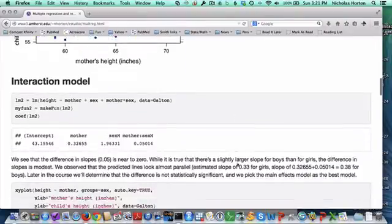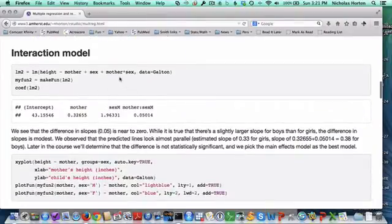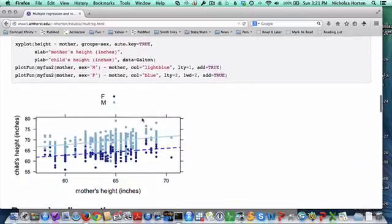We could also test the interaction model, which wonders whether the association between mother's height and the child height differs for boys and girls. When we do that, what we see is a coefficient of 0.05 for this interaction. That's pretty small, pretty close to zero. While it's true that there's a slightly larger slope for boys than for girls, the difference is fairly modest. We observe that they look almost parallel on these predicted values. You can see a little bit that it's a little tighter on this side than here. Again, this slope is about 0.05 units higher for the boys than for the girls, but really very similar.